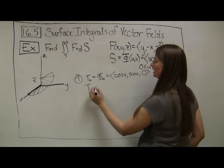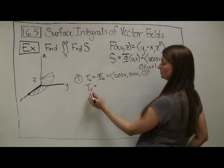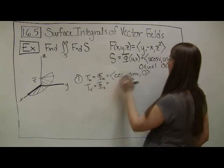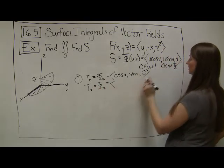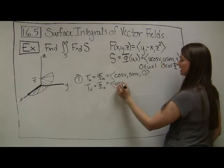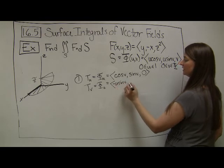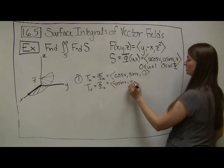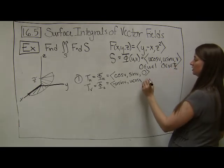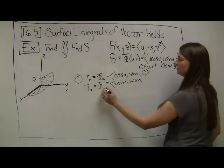My unit tangent with respect to v is the partial derivative of my φ function with respect to v, which in this case, the derivative of cosine is negative sine, so I end up with -u sin v, and then u cos v, and the derivative of v is 1. There should be a v down here.